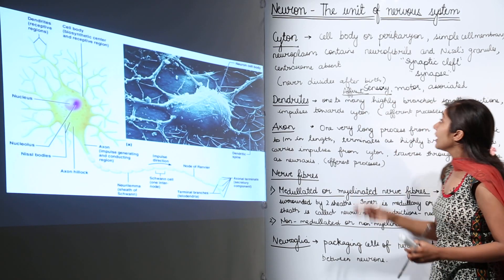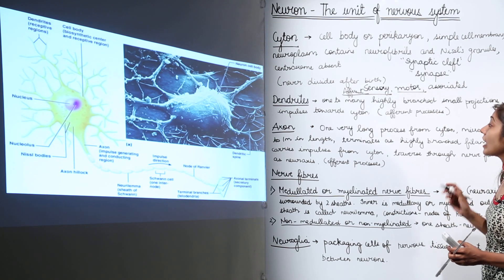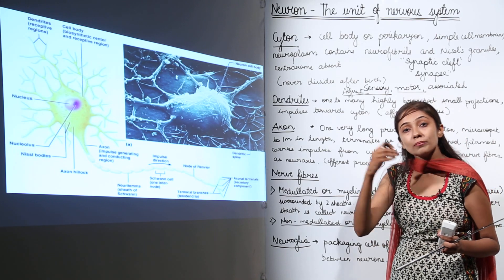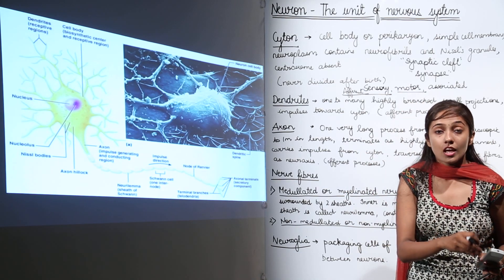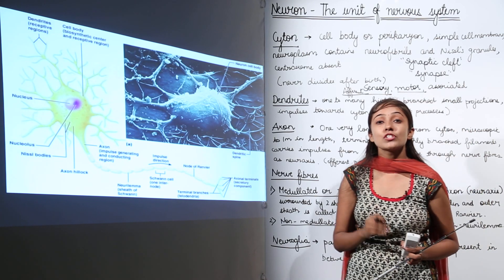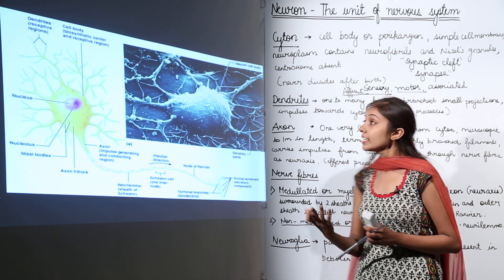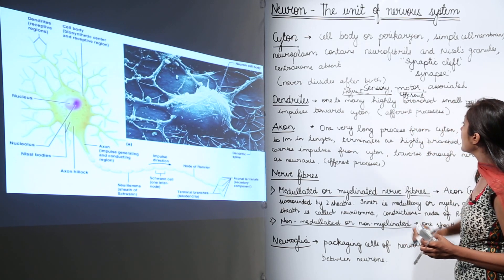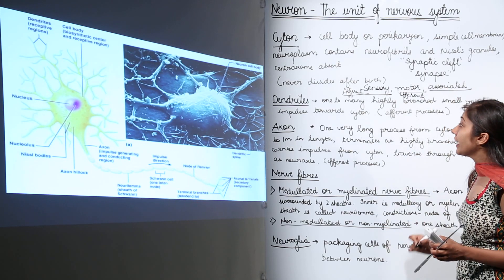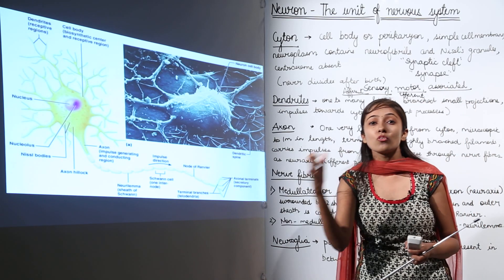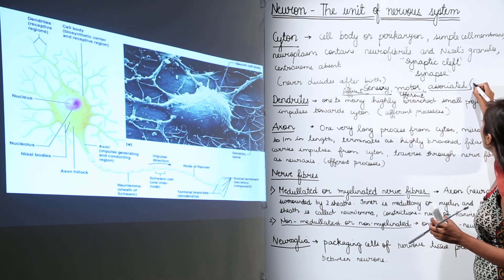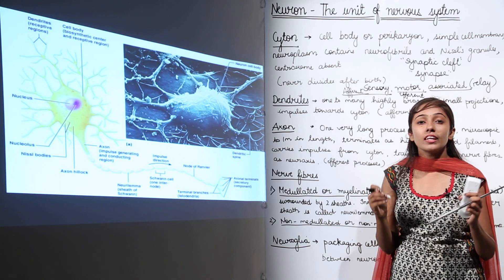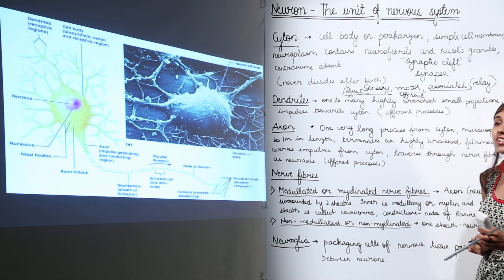Remember A comes first. Then we have motor neurons, which send messages from the brain to the effectors — the muscles and glands that act accordingly. Motor neurons are also known as efferent neurons. Then associated neurons form a connection between the sensory and motor neuron and are also known as relay neurons.